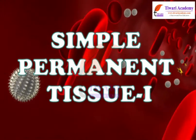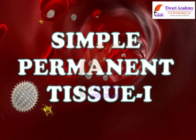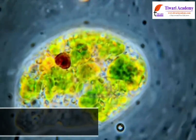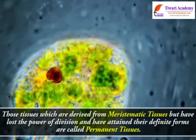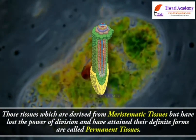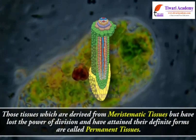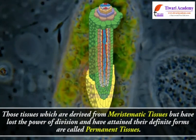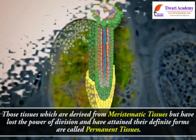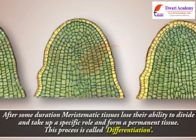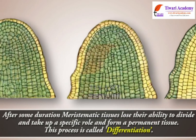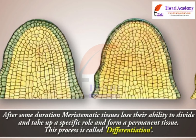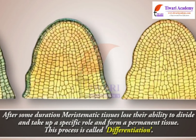Tissues that are derived from meristematic tissues but have lost the power of division and have attained their definite forms are called permanent tissues. After some time, meristematic tissues lose their ability to divide and take up a specific role to form a permanent tissue. This process is called differentiation.